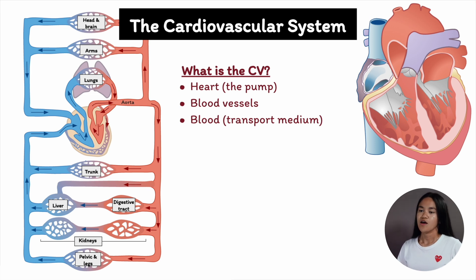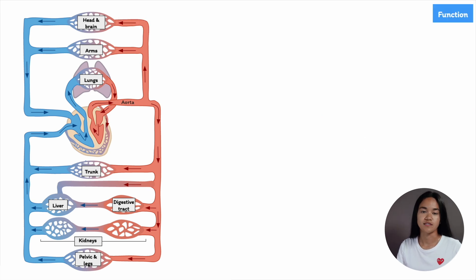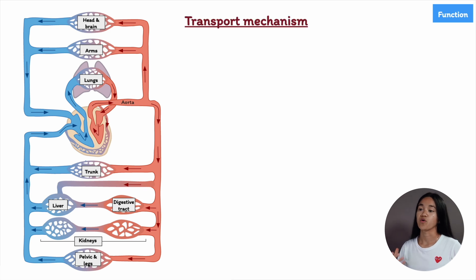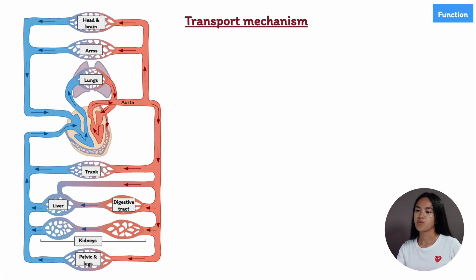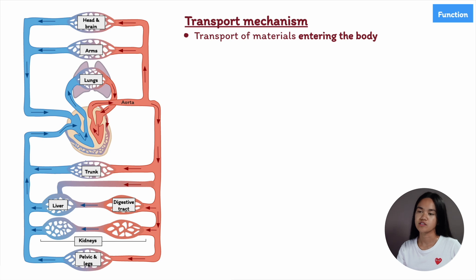The blood itself is the transport medium — it transports nutrients, oxygen, and waste products to and from cells. The primary function of the cardiovascular system is to transport materials to, between, and from various parts of the body as well as the external environment. This transport can be divided into three main categories: transport of materials entering the body, transport between cells or organs, and transport of materials leaving the body.